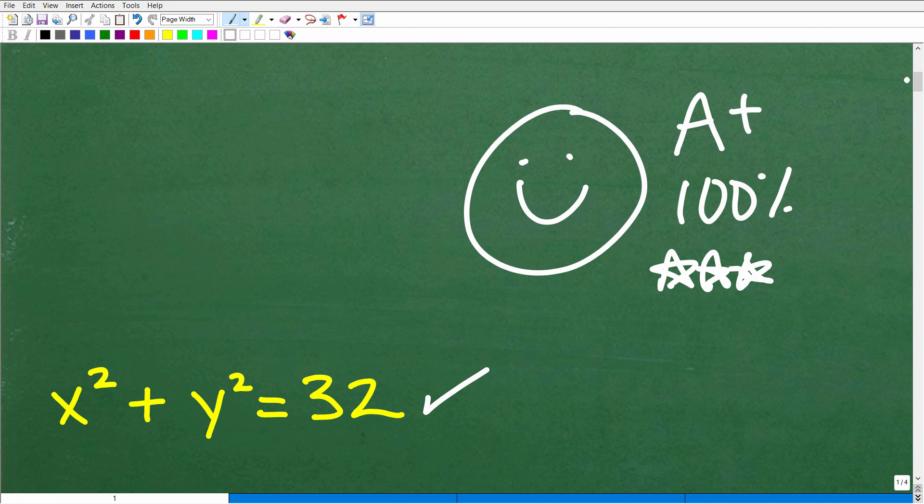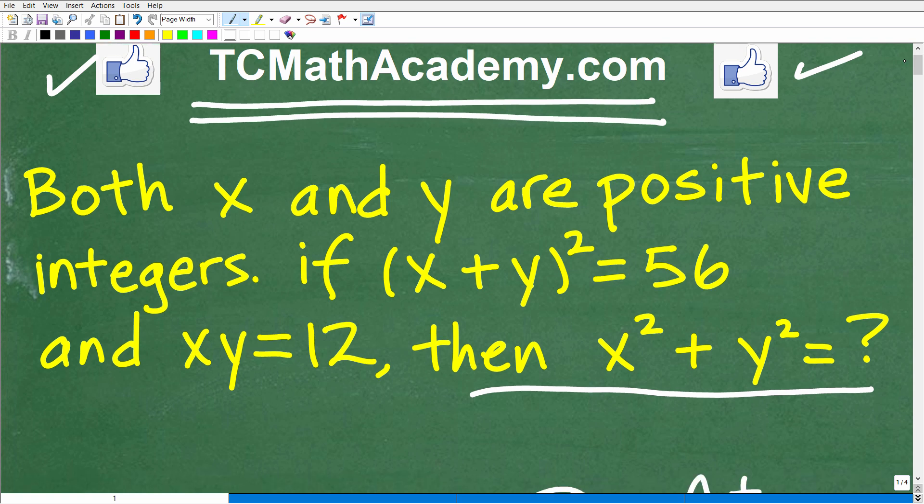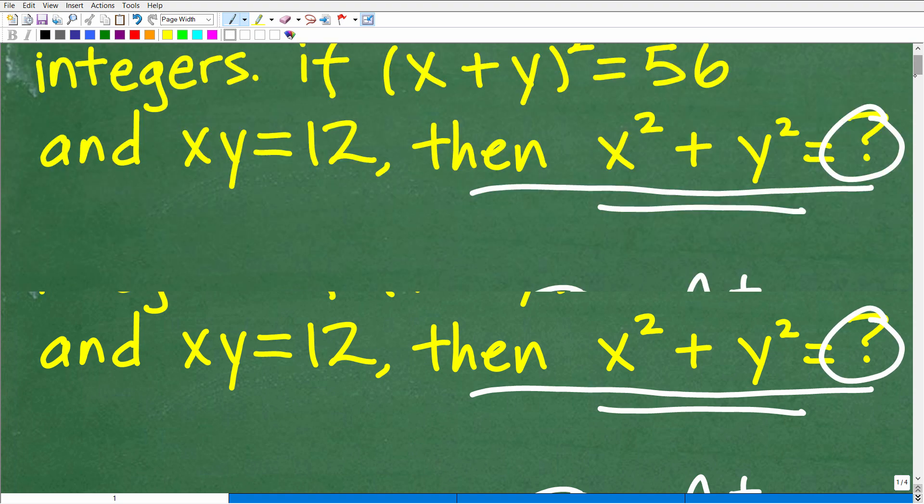Now, this type of problem would be something that you could possibly see on a test, like the SAT, ACT, things of that sort. It's not totally clear on exactly what to do. It's not like, hey, solve this equation. You recognize what type of equation. You just kind of do the work. But here you kind of actually have to think about, what are the parts of this problem? What am I supposed to do? Again, the most important part of any problem that you're asked in mathematics is to understand the question. And in this particular problem, the question is, we're trying to figure out what x² + y² is equal to, given this information. So let's go ahead and take a look at the solution.